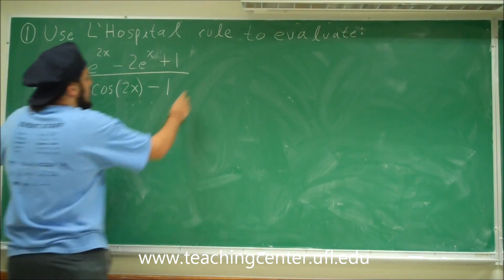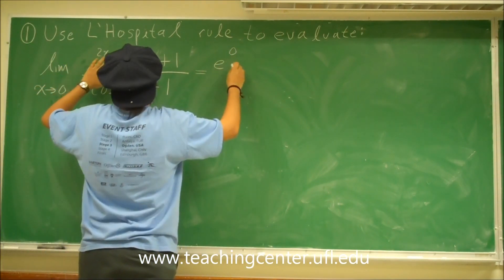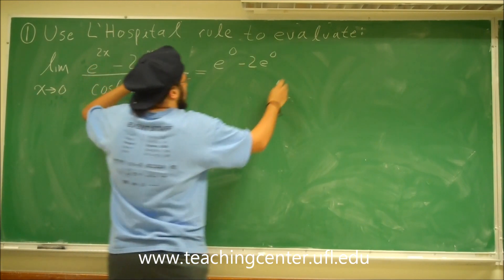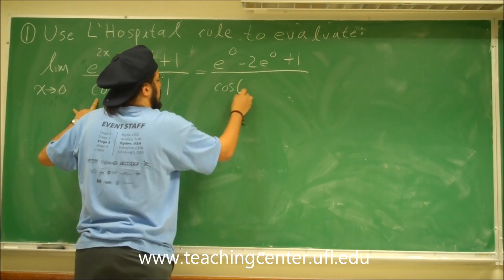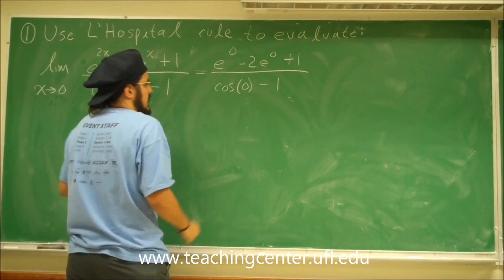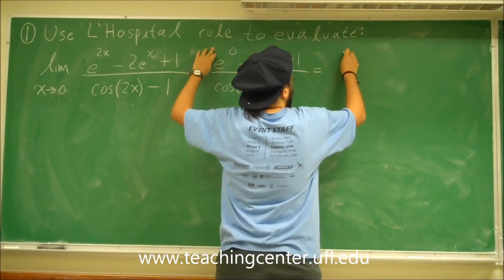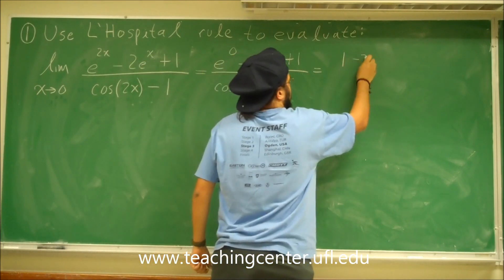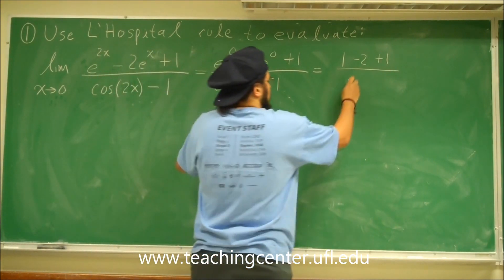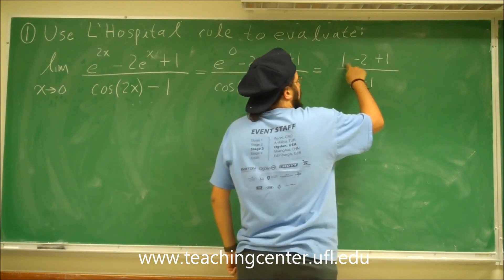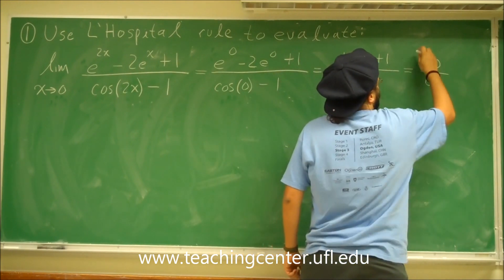First of all, plug in 0 to see what we get. If we plug in 0 into this, we get e to the 0 minus 2e to the 0 plus 1, all divided by cosine of 0 minus 1. e to the 0 is 1, and e to the 0 is also 1, so 1 times 2 is minus 2, plus 1. Cosine of 0 is 1, so we get 1 minus 1. On top: 1 minus 2 plus 1 equals 0, and on the bottom we get 0.